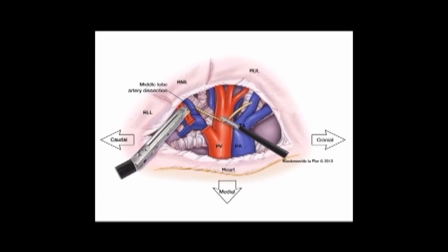Once the bronchus has been divided, you can encircle, staple, and divide the right middle lobe pulmonary artery. Once that vessel branch has been divided, all you have to do is dissect the fissure and staple and divide it, completing a right middle lobectomy. Once the right middle lobectomy has been performed, you can place the right middle lobe into an endocatch bag and remove it through the utility port.